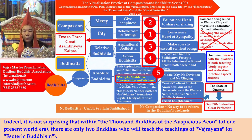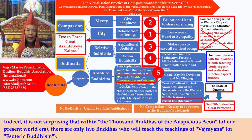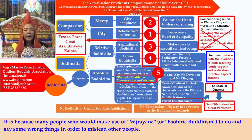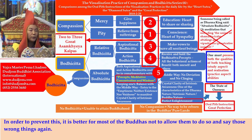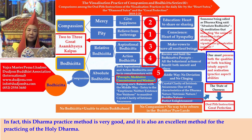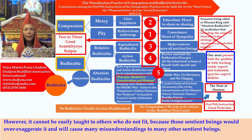Indeed, it is not surprising that within the thousand Buddhas of the auspicious Aeon of our present world era, there are only two Buddhas who will teach the teachings of Vajrayana or esoteric Buddhism. Many people make use of Vajrayana to do and say wrong things in order to mislead other people. In order to prevent this, most Buddhas do not allow them to do so. This Dharma practice method is very good and excellent for practicing the Holy Dharma. However, it cannot be easily taught to others who do not fit, because those sentient beings would over-exaggerate it and cause many misunderstandings.